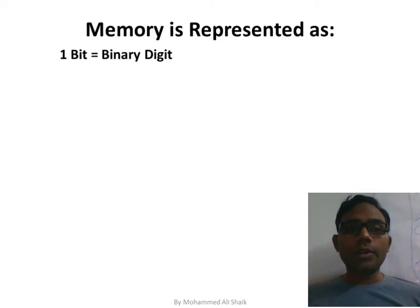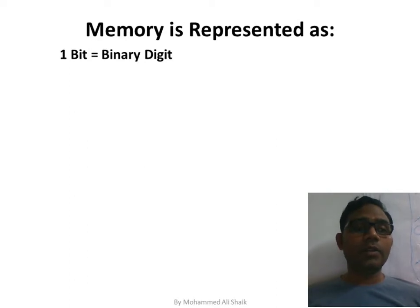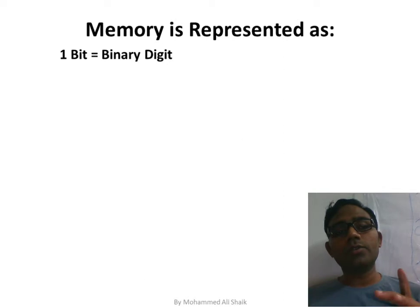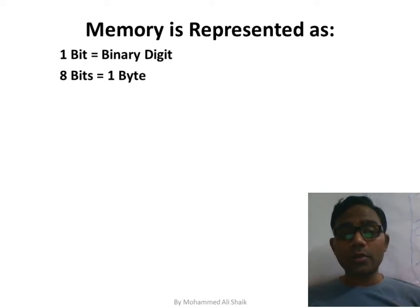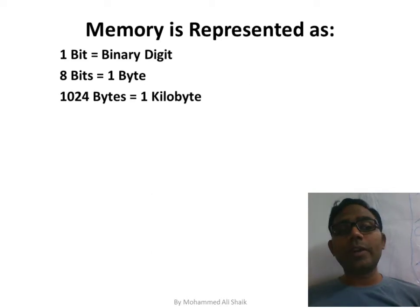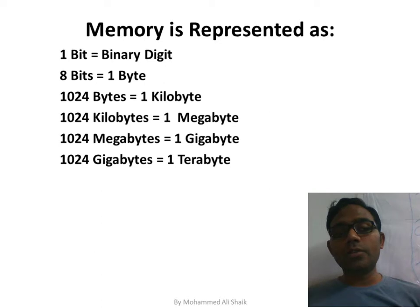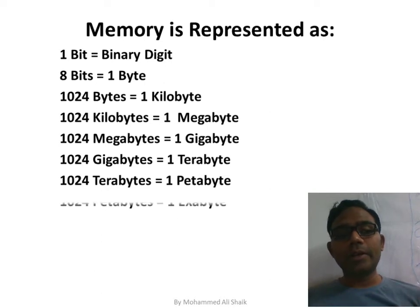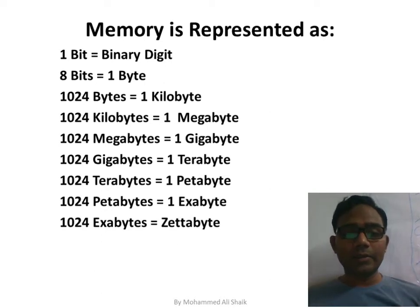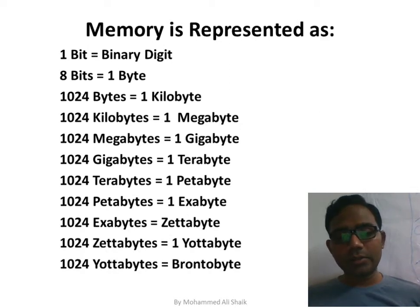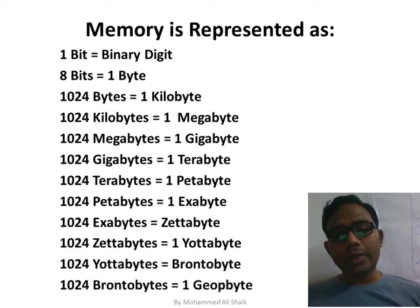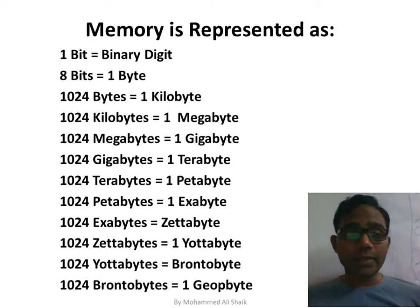Memory is represented in bits and bytes. A bit stores a binary digit (0 or 1). 8 bits = 1 byte; 1024 bytes = 1 kilobyte; 1024 kilobytes = 1 megabyte; 1024 megabytes = 1 gigabyte; then terabyte, petabyte, exabyte, zettabyte, yottabyte, brontobyte, and geopbyte.